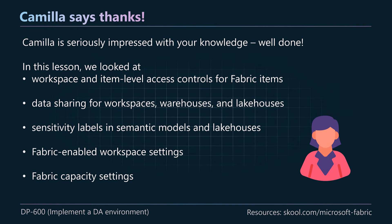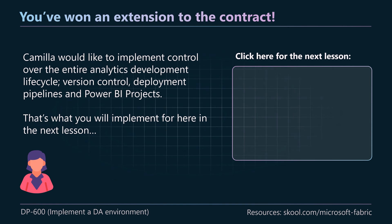Camilla is seriously impressed. In this lesson we covered all five elements of the DP600 study guide: workspace and item level sharing, data sharing for data warehouses and lake houses, sensitivity labeling, and workspace and capacity level settings. You've won an extension to the contract — Camilla wants you to implement control over the entire analytics development lifecycle, covering version control, deployment pipelines, and Power BI projects. Click here to continue to the next lesson.